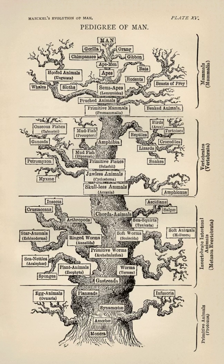Current research has widened to cover the genetic architecture of adaptation, molecular evolution, and the different forces that contribute to evolution including sexual selection, genetic drift, and biogeography. The newer field of evolutionary developmental biology investigates how embryonic development is controlled, creating a wider synthesis that integrates developmental biology with the fields covered by the earlier evolutionary synthesis.